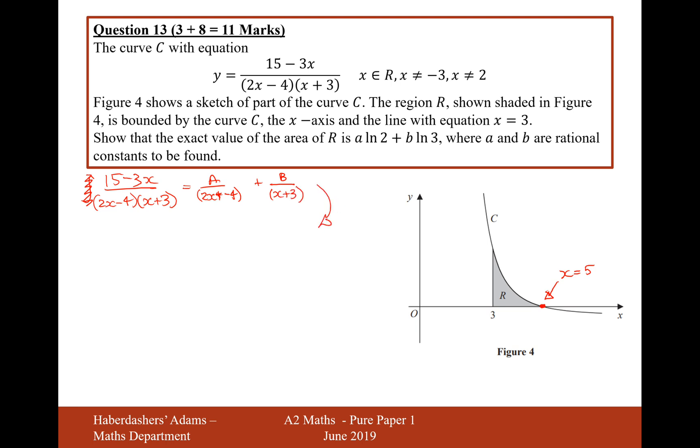Let's now multiply everything by 2x minus 4, x plus 3. So that's going to make it 15 minus 3x. If I multiply by both of those brackets on the left-hand side, it will just cancel out them as denominators. And then on the right-hand side, if I times a over 2x minus 4 by both of these brackets, then the 2x minus 4 will cancel out, and I'll have x plus 3 left over, plus b. And for the same reason, the 2x minus 4 will go here.